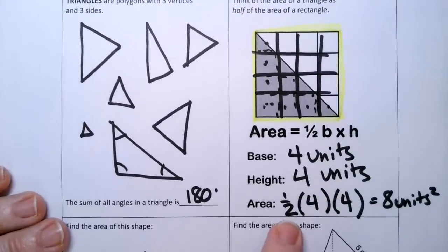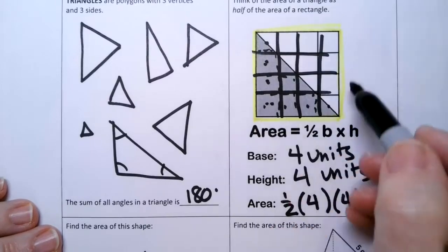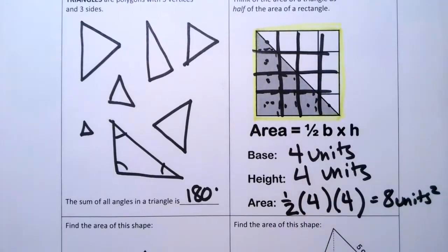All right. Most mistakes are made because you forget the one half. And if that's the case, then you're just finding the area of the whole thing. So you'll get too much.